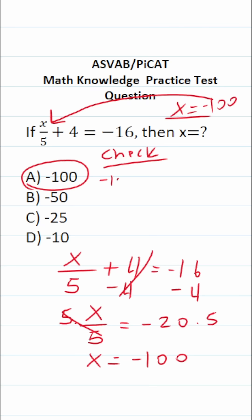This becomes negative 100 over 5 plus 4 equals negative 16. Negative 100 divided by 5 - again, a negative divided by a positive is a negative - gives us negative 20. So this is negative 20 plus 4 equals negative 16, which is correct.